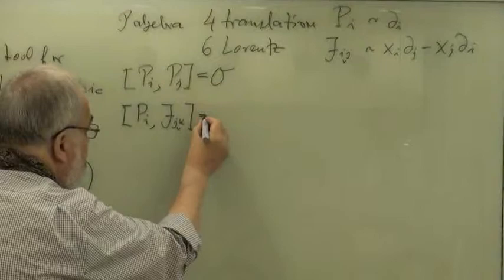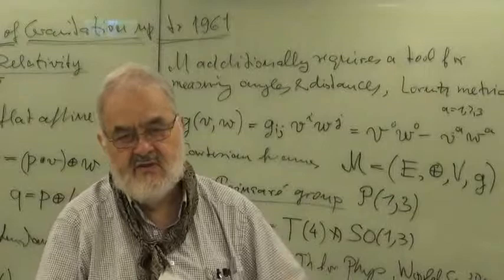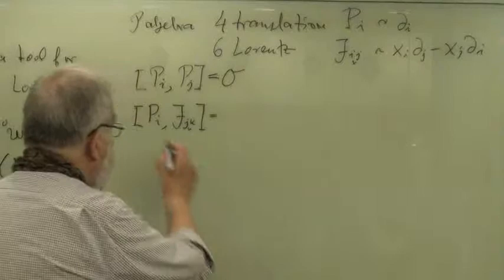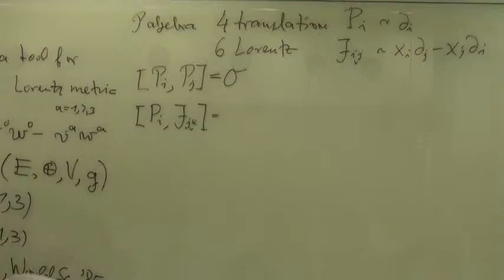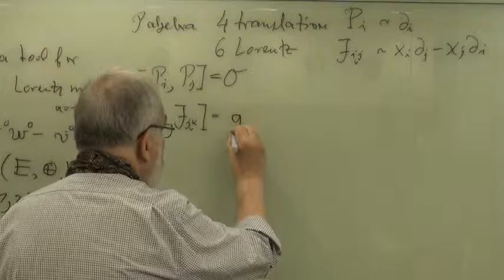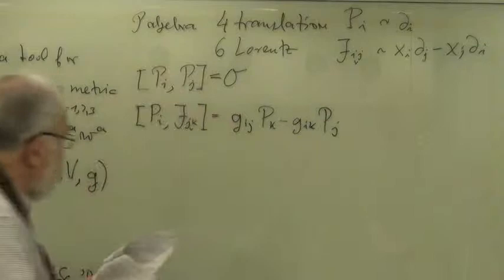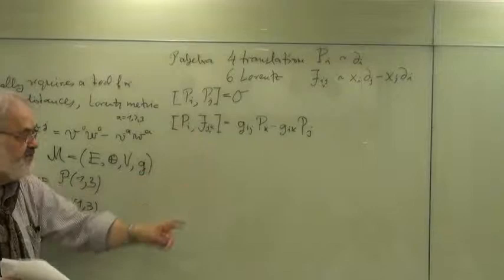The translations do not commute with the rotations, with the Lorentz rotations. The commutator of Pi with Jjk, where J is antisymmetric as you can see here, gives gij times Pk minus gik times Pj. This is the semi-direct structure.